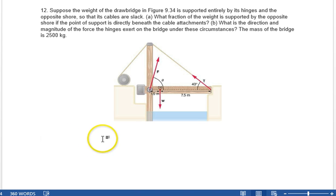Alright, so what fraction of the weight is supported by the opposite shore at the point of support is directly beneath the cable attachment. So let's look at the equation for the torques. All the torques have to add up to zero. And let's take the hinge as the pivot point, because that takes one of the forces out of play, and leaves us with just the weight of the bridge and the force on the opposite shore.